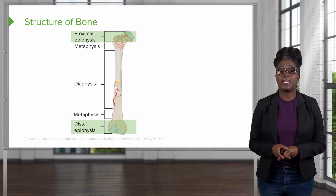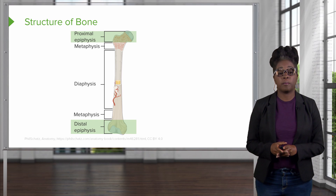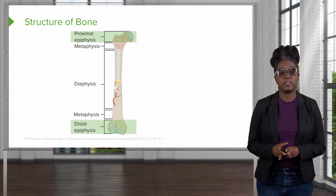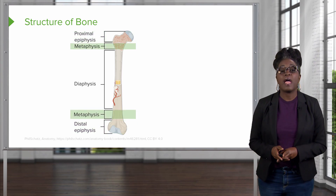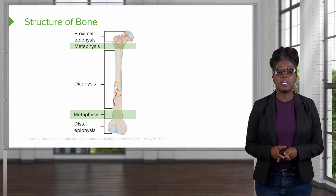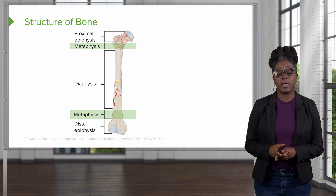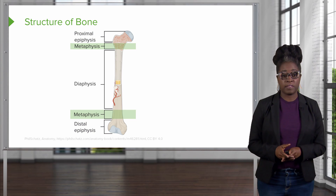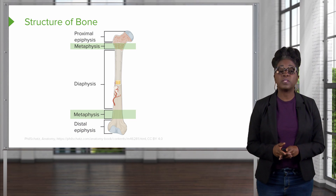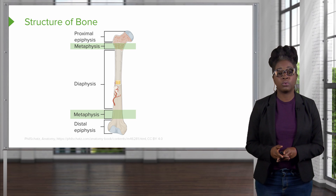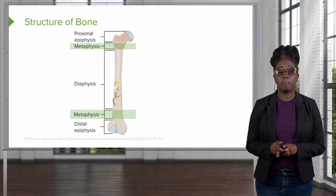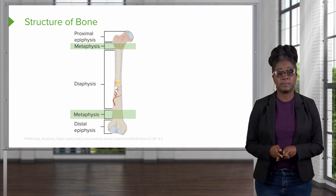At each end of the bone, you have the two epiphyses. The region that separates the diaphysis from the two epiphyses is referred to as the metaphyses.